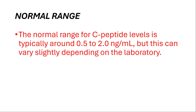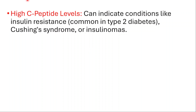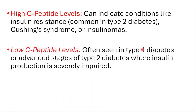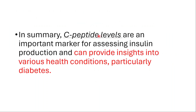The normal range for C-peptide is typically around 0.5 to 2 ng/mL, though this can vary slightly depending on the laboratory. High C-peptide levels can indicate conditions like insulin resistance seen in type 2 diabetes, Cushing's syndrome, or insulinoma. Low levels are often seen in type 1 diabetes, but also in advanced type 2 where insulin production is severely impaired.